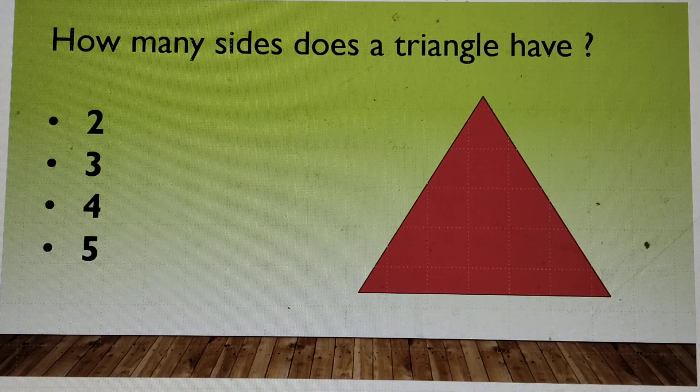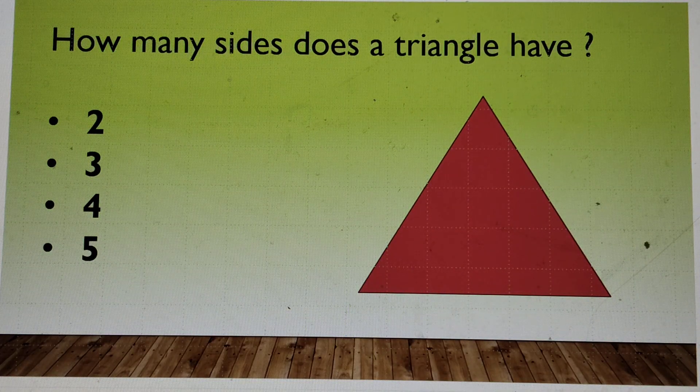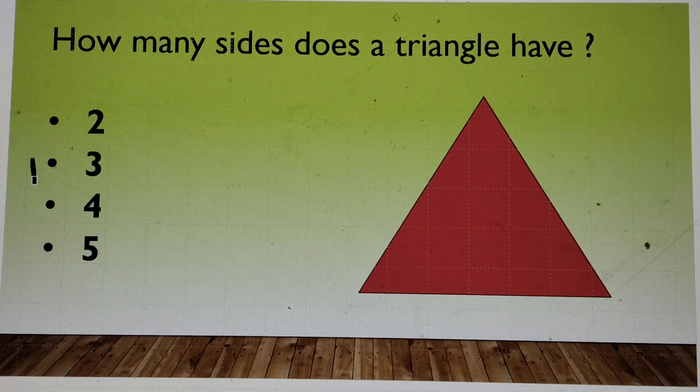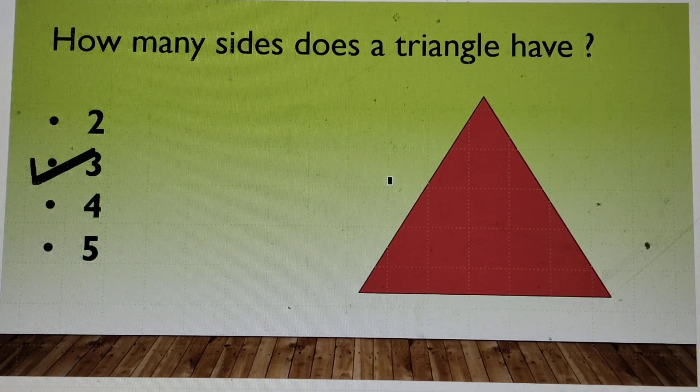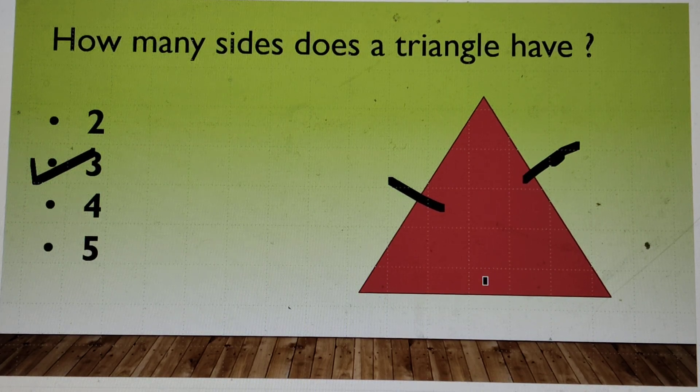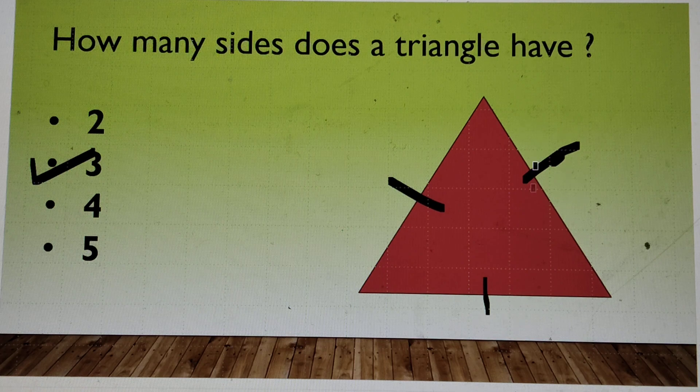How many sides does a triangle have? 2, 3, 4, 5? 3. The correct answer is 3. Let's count. 1, 2 and this is the third one. So triangle has 3 sides.